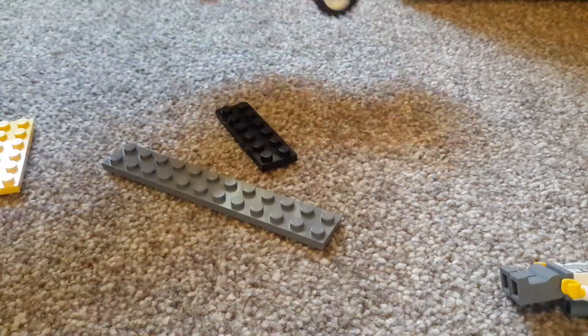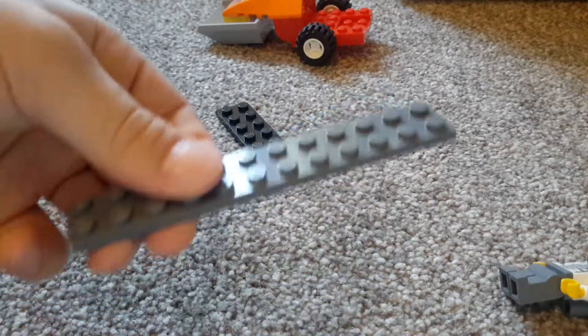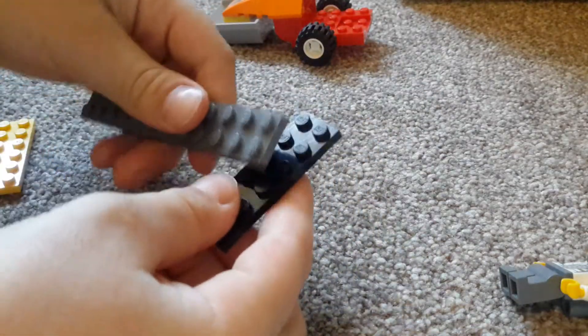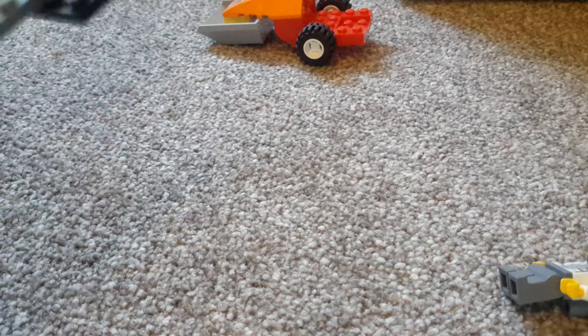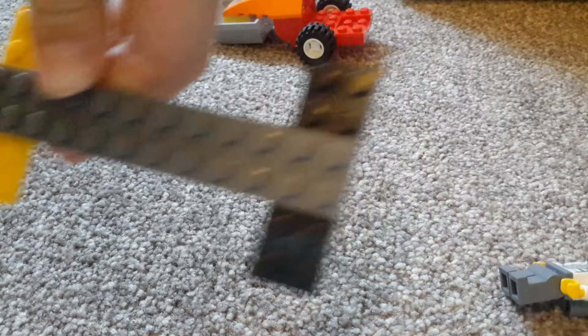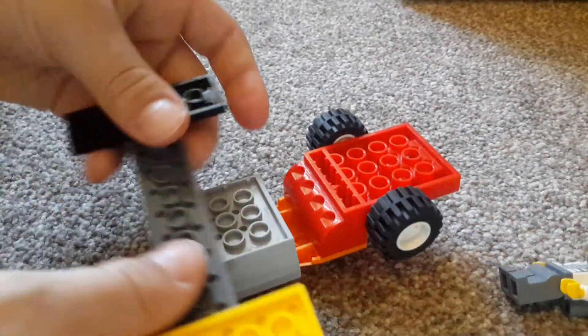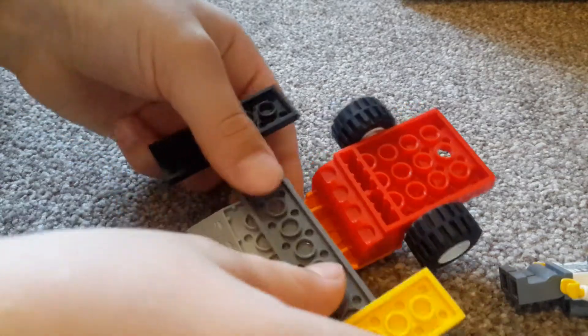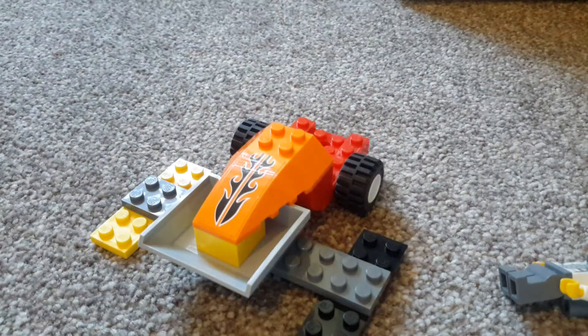And then we're going to move that to the side. We're going to get this piece and put these pieces on, these two by sixes on. And then flip this over and put this on at the back here of this little tub. Then flip it over.